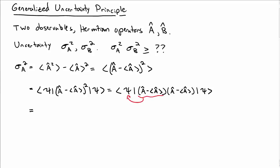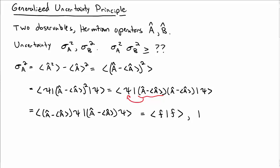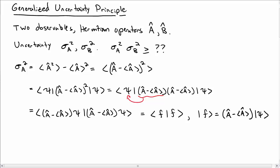Since A is a Hermitian operator, I can move one factor over onto the bra of psi. So now that operator is acting on psi, and we take the inner product with the same thing acting on psi. I can write this as the norm of a state f, where f is the operator A minus the expectation value of A acting on the generic state psi.